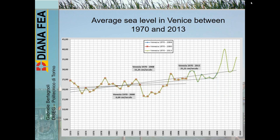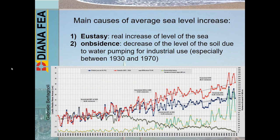Let's look at the reasons related to this increase. The main causes of the average sea level increase are two. The first is eustasy — the real increase of the level of the sea, not related to land movement. It is an overall increase of the seas due to rise of temperature on the planet, the melting of ice at the North and South Pole, and other phenomena. Eustasy is a global phenomenon. Then there is subsidence, which is the decrease of the level of the soil, and it is a local phenomenon.